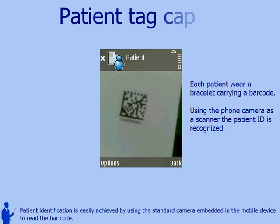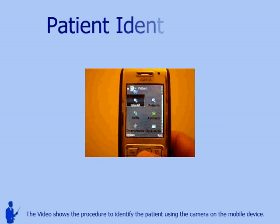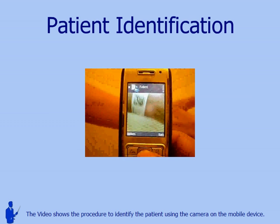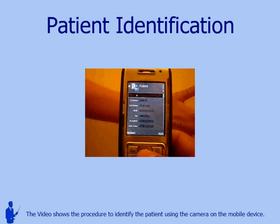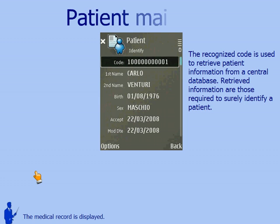Patient identification is easily achieved by using the standard camera embedded in the mobile device to read the barcode. The video shows the procedure to identify the patient using the camera on the mobile device. The medical record is displayed.